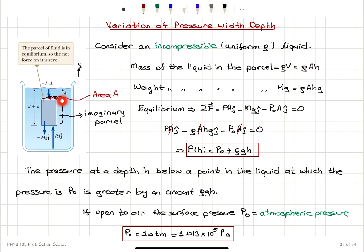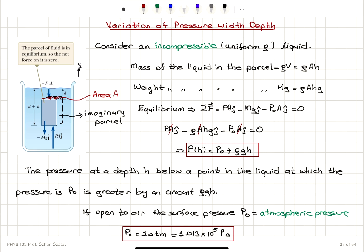When thinking about the variation of pressure with depth inside a liquid, we analyzed an imaginary parcel filled with liquid in equilibrium. This shows that pressure increases from the top surface downward with distance. If we call the pressure at the top of the parcel P₀, then the pressure at the bottom becomes P₀ plus rho·g·h. If the top surface is open to air, P₀ is atmospheric pressure, and one atmosphere equals 1.013 times 10⁵ pascals.